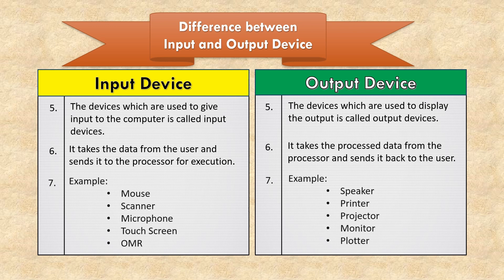Input device examples: mouse, scanner, microphone, touchscreen, and OMR. Output device examples: speaker, printer, projector, monitor, and plotter.